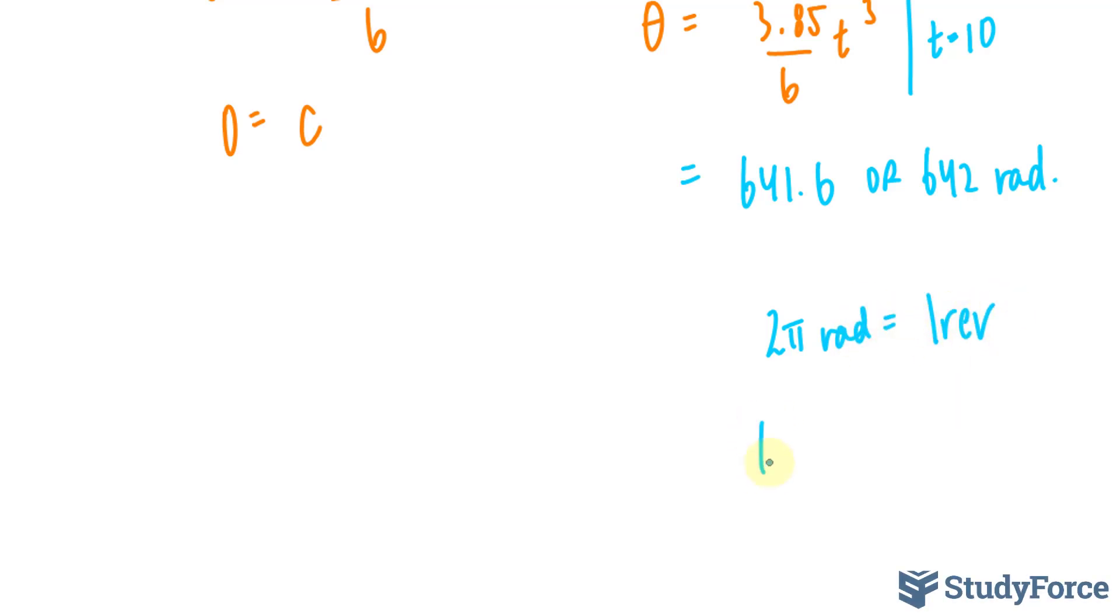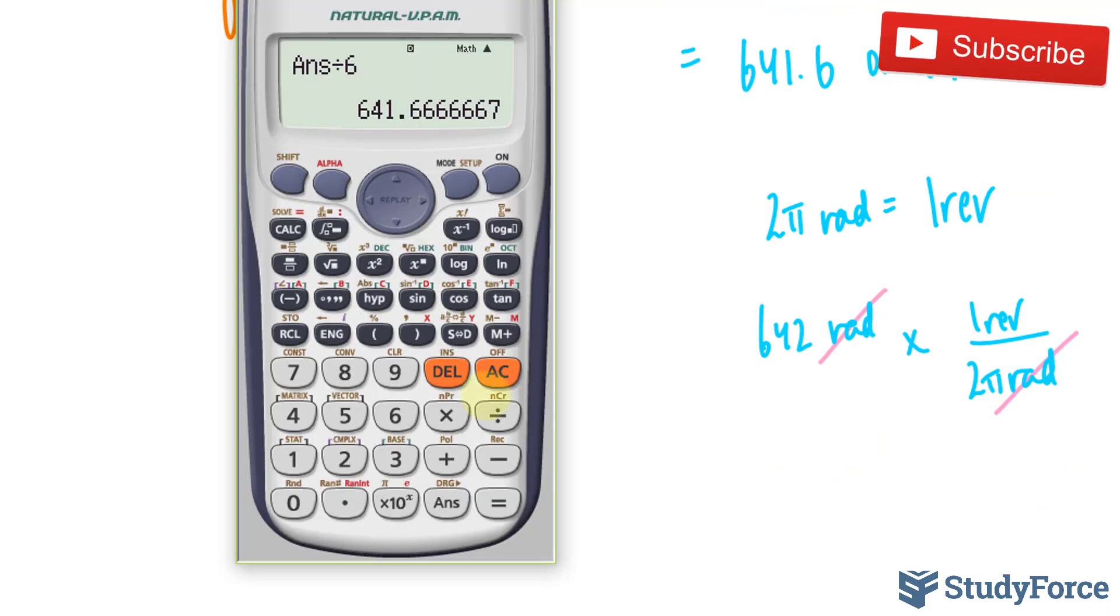So I'm going to take 642 radians and multiply it by 2 pi radians at the bottom and 1 revolution at the top. This way, the units cancel out, leaving us with this number divided by 2 pi, and we get 102 revolutions.